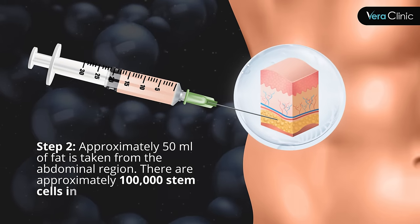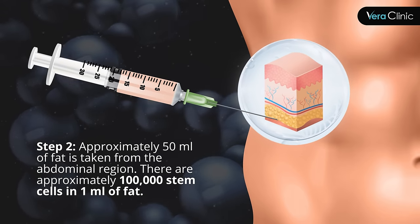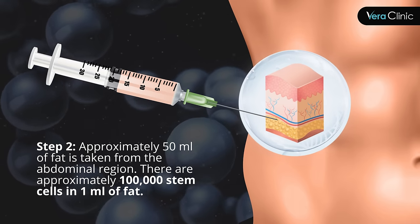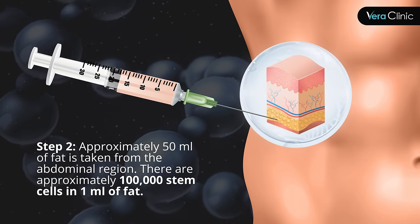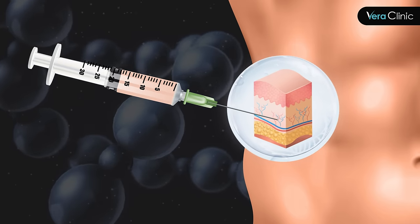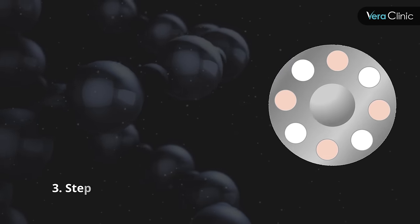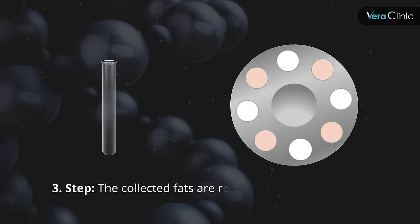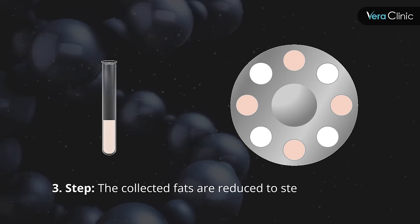Step 2: Approximately 50 milliliters of fat is taken from the abdominal region. There are approximately 100,000 stem cells in 1 milliliter of fat. Step 3: The collected fats are reduced to stem cell sizes.